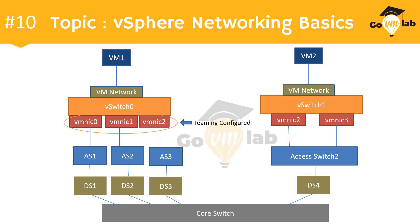Now let's assess the physical networking. VMNIC0 is connected to its own dedicated access switch AS1, and AS1 is connected to its own dedicated distribution switch DS1. Similarly, VMNIC1 is connected to its own dedicated access switch AS2, which is connected to distribution switch DS2. VMNIC2 is connected to its own dedicated access switch AS3, which is connected to distribution switch DS3. All three distribution switches — DS1, DS2, and DS3 — are connected to a common core switch. This is how VM1's networking layout looks.